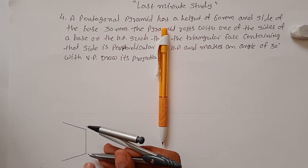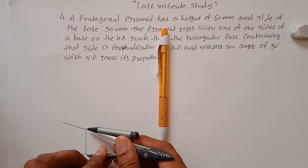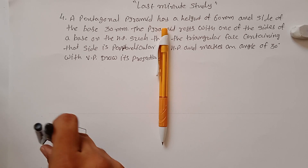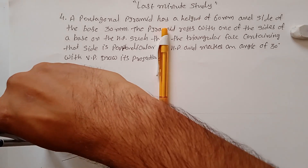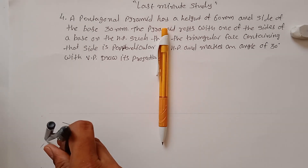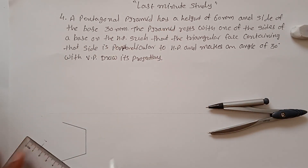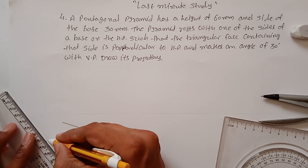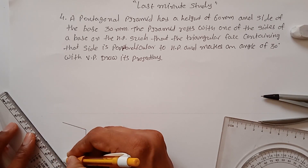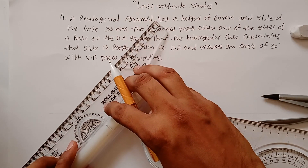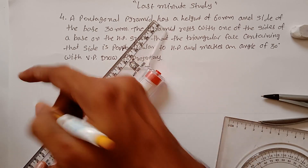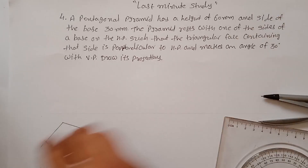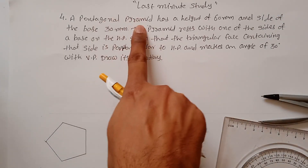Measure a distance of 30 mm to find out the last corner point, and use an arc to find the intersecting point. This point is my final point. I have now completed my pentagon.